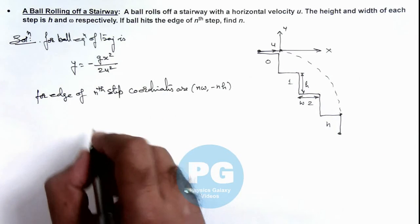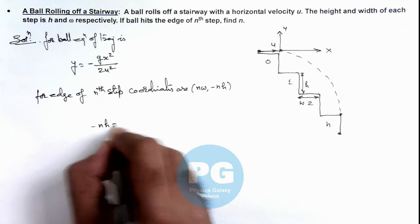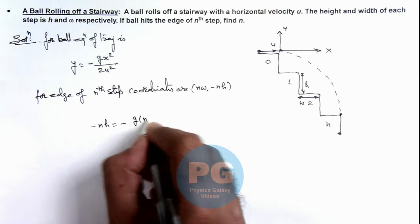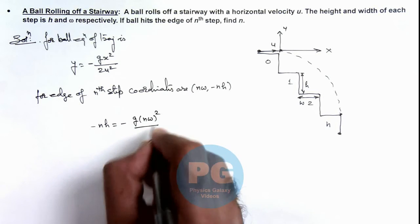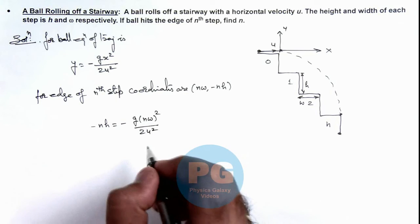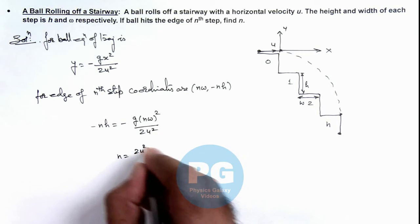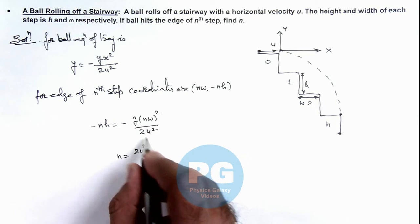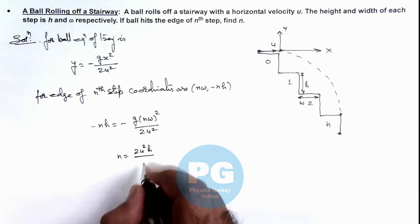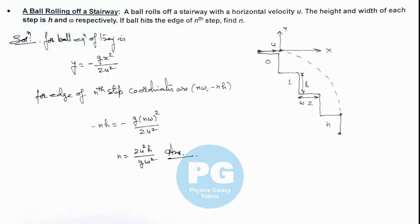Substituting in this equation, the value of y we can write as -nh = -g(nw)²/2u². If we simplify, one n gets cancelled out. The value of n we are getting is n = 2u²h/gw². This is the final result of this problem, the number of the step on which the ball is going to hit.